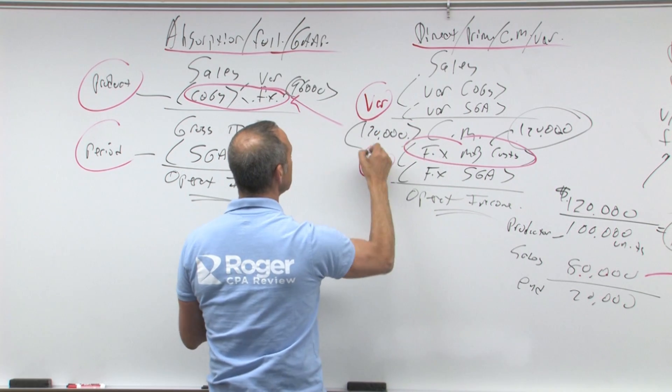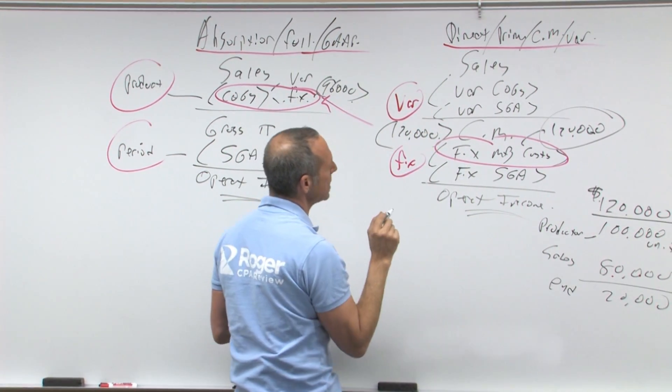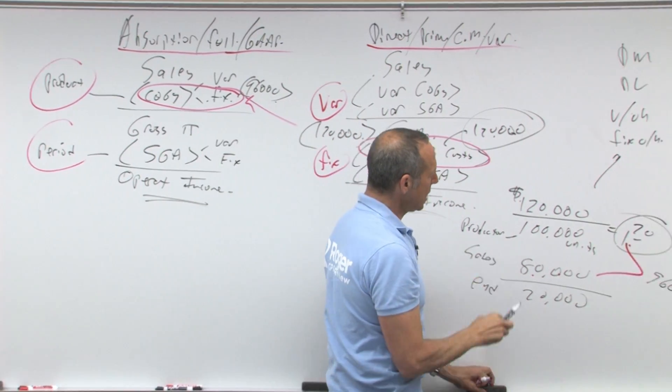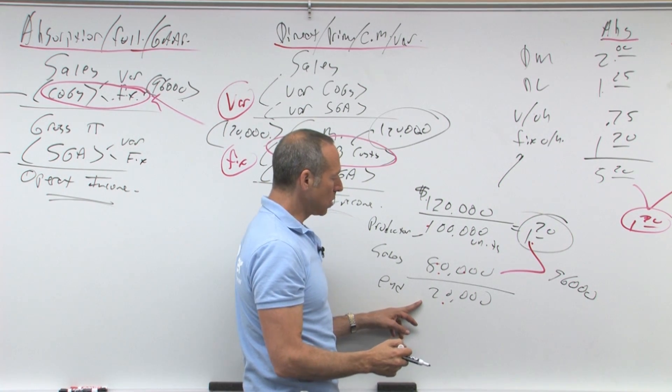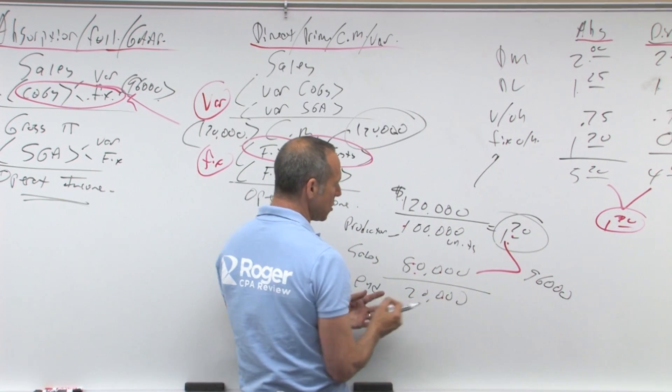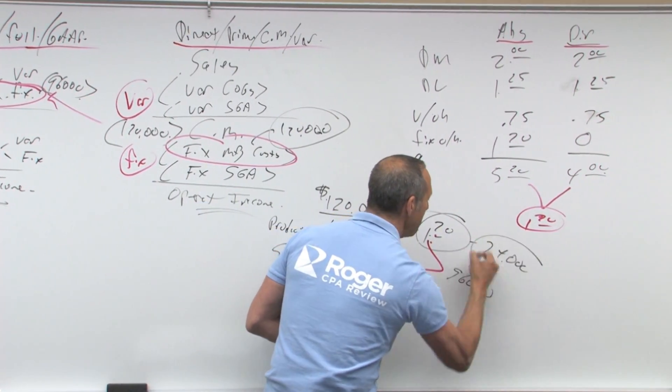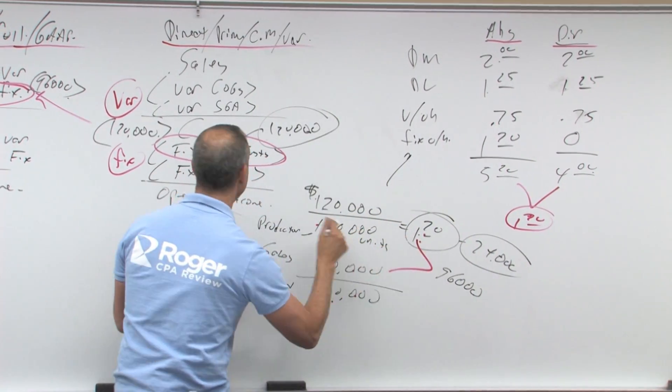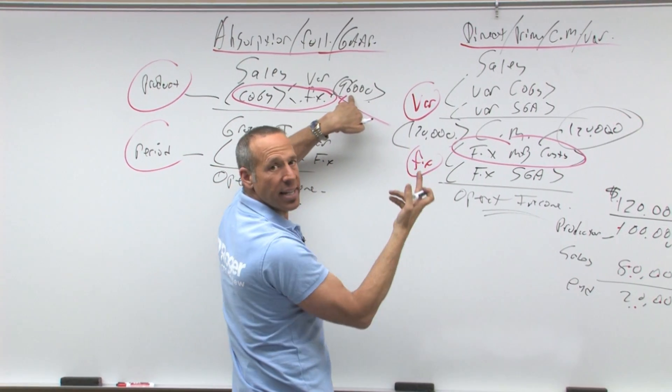Notice, what is the difference between 96 and 120? Well, I'll show you an easier way to figure this out. What's the difference between what I produced and what I sold? Ending inventory went up by 20,000 units. 20,000 units at $1.20 a unit is $24,000.